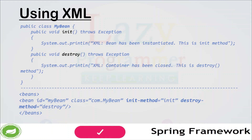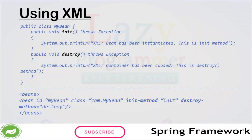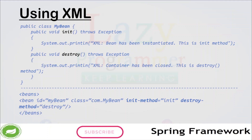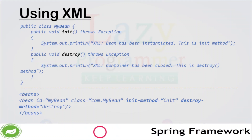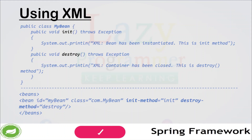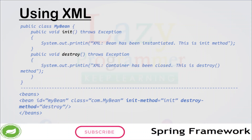Before configuring the custom init and destroy method using XML, we need to create those methods in the MyBean class. Once these are created, we need to configure these details in XML. In the bean definition we have two properties — init-method and destroy-method — where we can define the recently created methods. When the bean is instantiated by the container, the custom init method will be called, and similarly the destroy method will be called just before the container is closed.